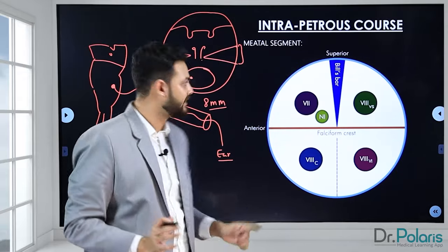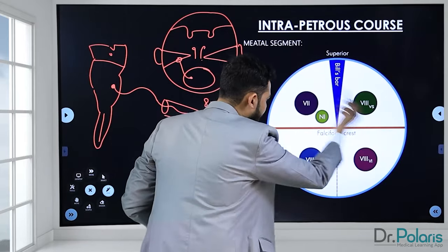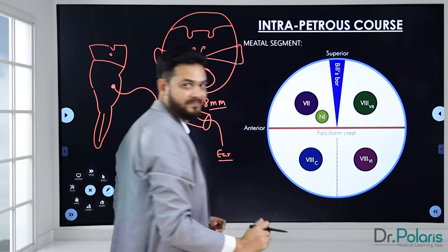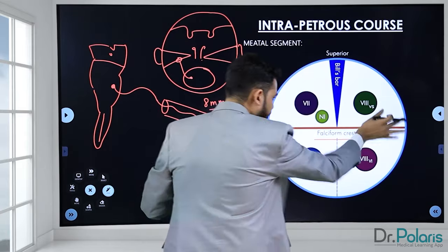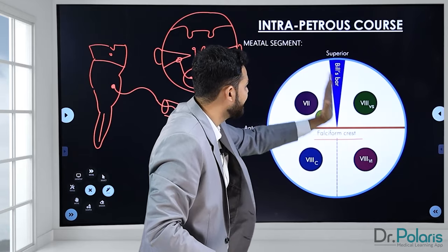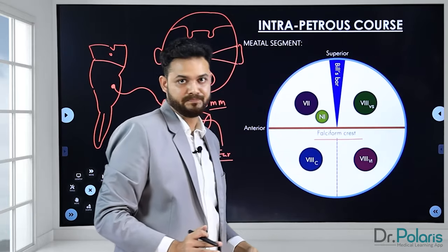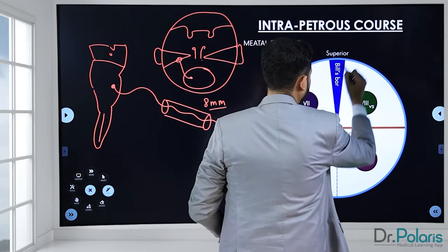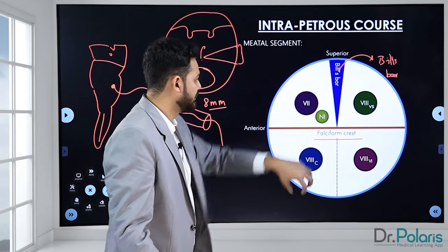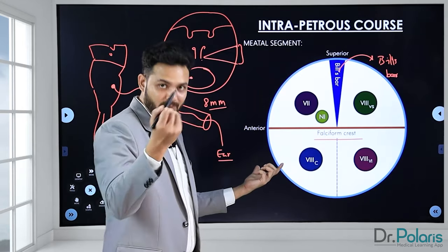Inside the internal acoustic meatus, it's not only the facial nerve running into the petrous part — there are other cranial nerves too. The whole interior of the IAM is divided by a horizontal crest called the falciform crest or horizontal crest. There is also an incomplete vertical partition superiorly called Bill's bar, which cuts only the superior part of the IAM; the inferior part is continuous.